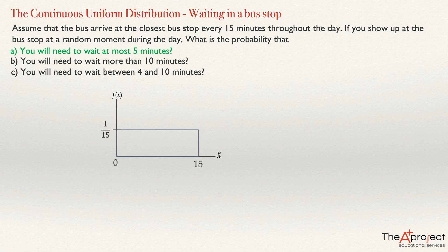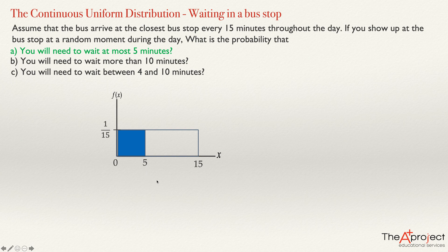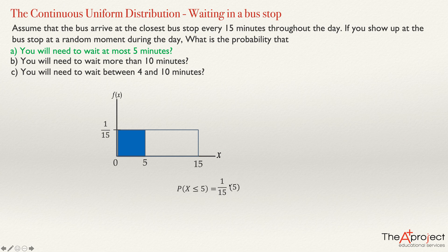Now I can answer any question about this probability. For part (a), if they ask for less than five minutes, five will be somewhere on the graph, and I just need to compute the area of the rectangle between zero and five. The probability that the random variable is at most five minutes equals the height, 1 over 15, times the base, which is 5. That gives 5 over 15, which is 0.3333, or 33.33%.